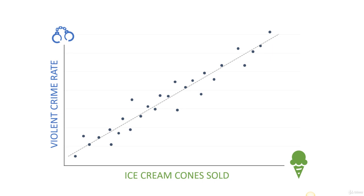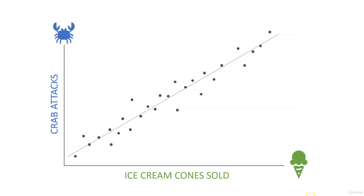If you're wondering what's going on and how this could possibly be true, here's a hint. The y-axis violent crime rate could just as easily be drowning deaths, forest fires, or even your dreaded crab attack. Think about what those things have in common and you'll start to realize this has nothing to do with ice cream at all — and everything to do with temperature. As temperatures rise, more people are out later gathering in public spaces, so crime rates increase. More people go to the beach and swim, so drowning deaths increase, and so on. Because ice cream sales are such a close proxy to temperature, we've created a false narrative that paints a completely misleading story.